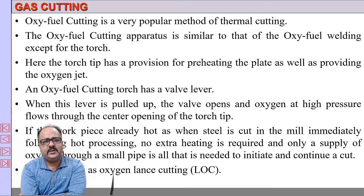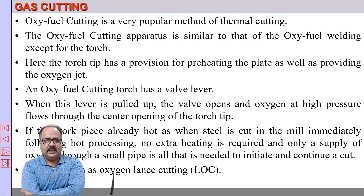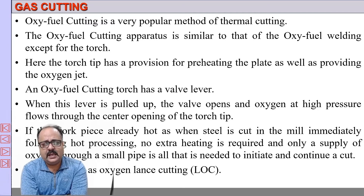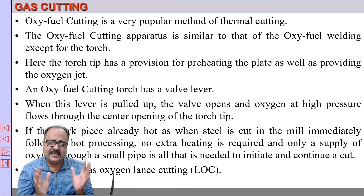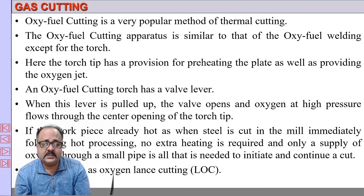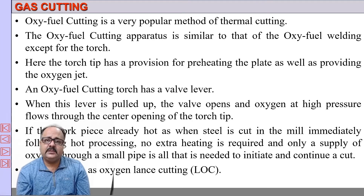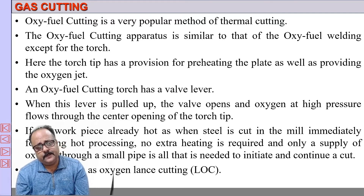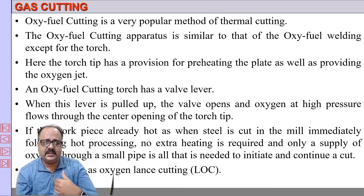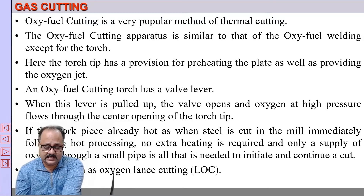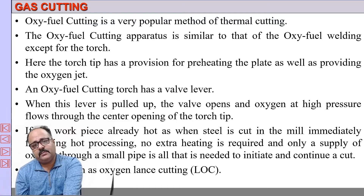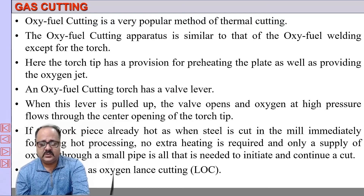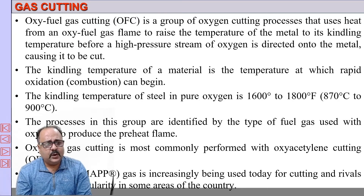Next, we have gas cutting — also called oxy-fuel cutting or oxyacetylene cutting. It is a popular method of thermal cutting where the torch tip has a provision for pre-heating the plate as well as providing an oxygen jet. The setup is the same as oxy-fuel welding; the only difference is the torch. The torch has a provision for pre-heating the metal piece being cut, and also a provision for a jet of oxygen. It is widely used in the steel industry for cutting steel strips, especially strips already in a heated condition, where no additional pre-heating is required.